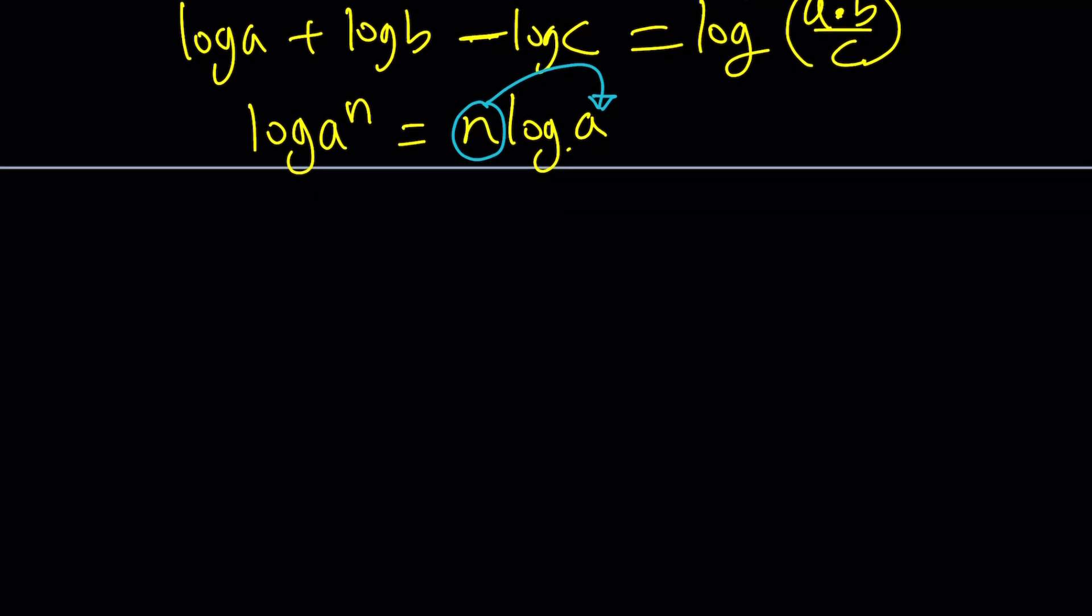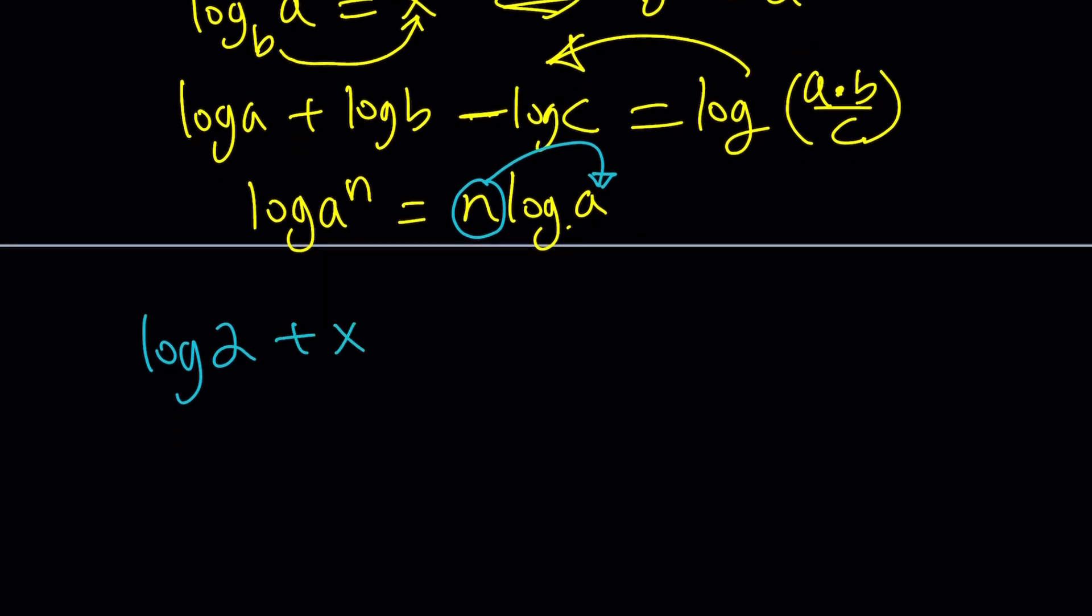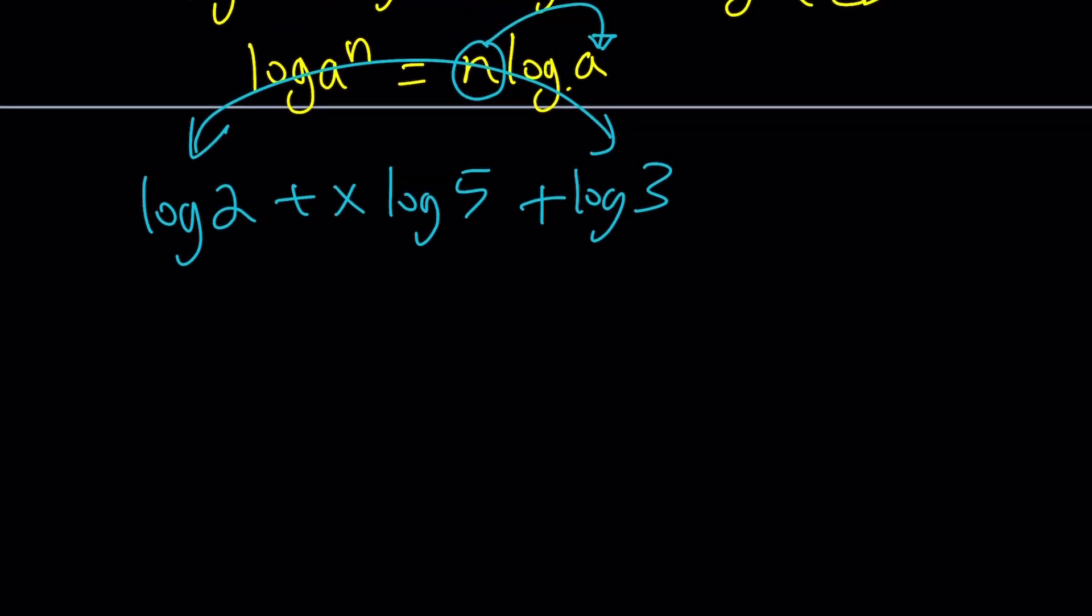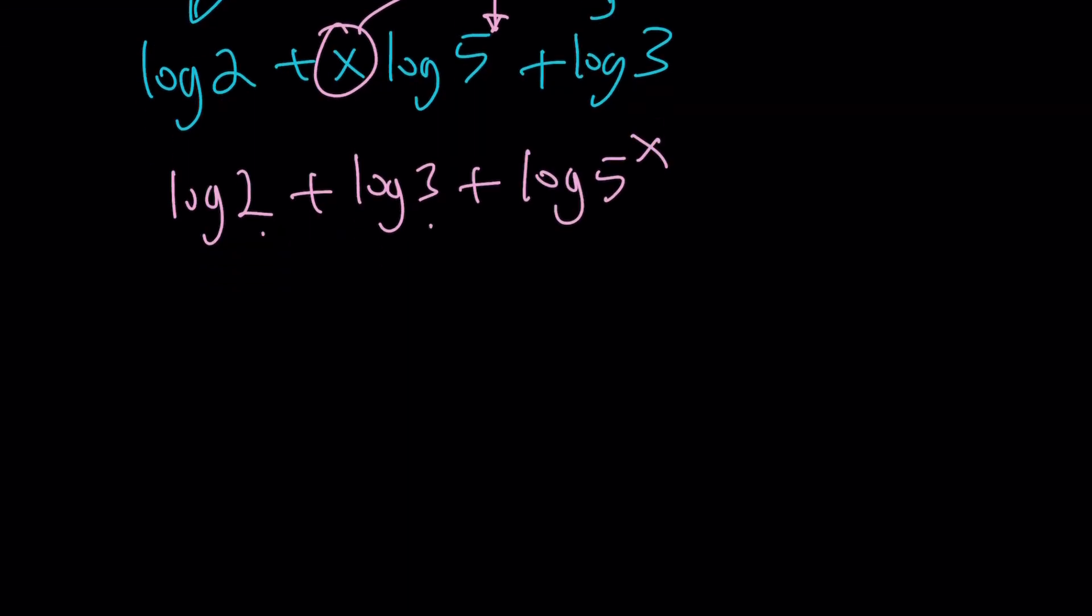Let me rewrite the problem. We have log 2 plus x log 5 plus log 3. There's a reason why they put this x log 5 in the middle and separated these two things - to confuse you a little bit. That's what they do with math competitions. First, we're going to move this back up. It's going to be log 2 plus log 3 plus log 5 to the power x. We multiply these. Because it's the sum of logs, it's going to be log 2 times 3 times 5 to the power x, which is log 6 times 5 to the power x.